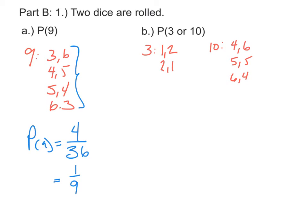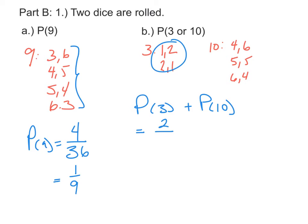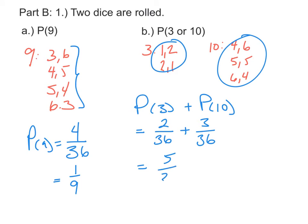We can calculate the probability of a 3 or a 10 by adding the two probabilities together. The probability of getting a 3 is 2 successful outcomes out of 36 possible, plus 3 successful outcomes out of 36 possible. Adding those together, we get 5 out of 36, and that's a fraction we can't reduce.